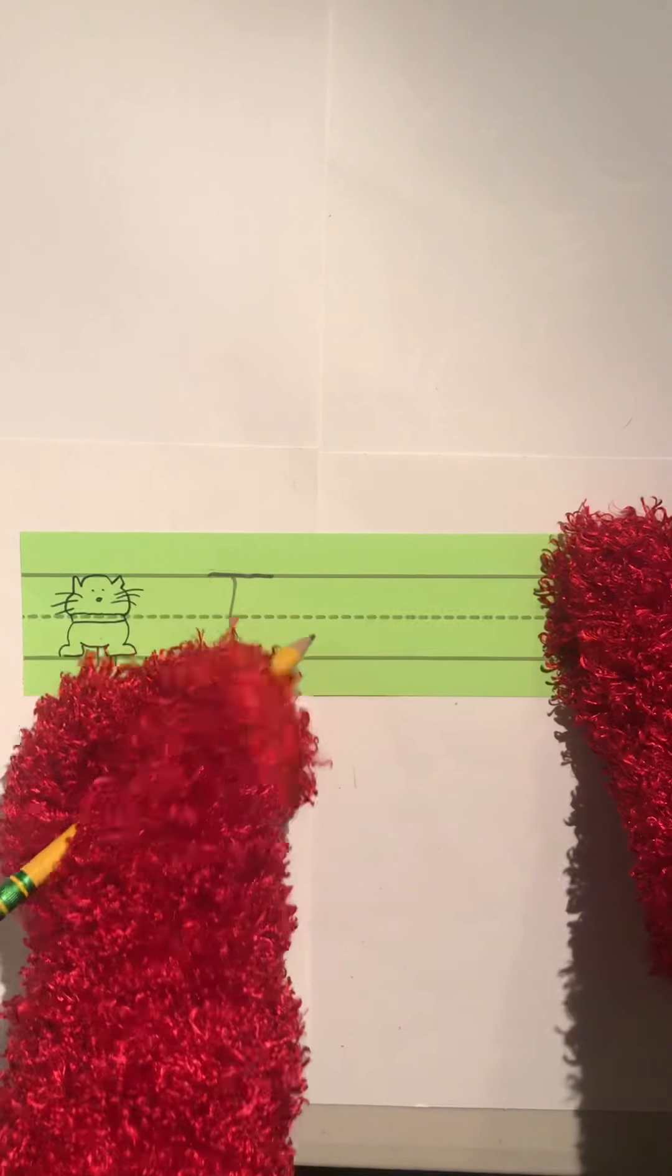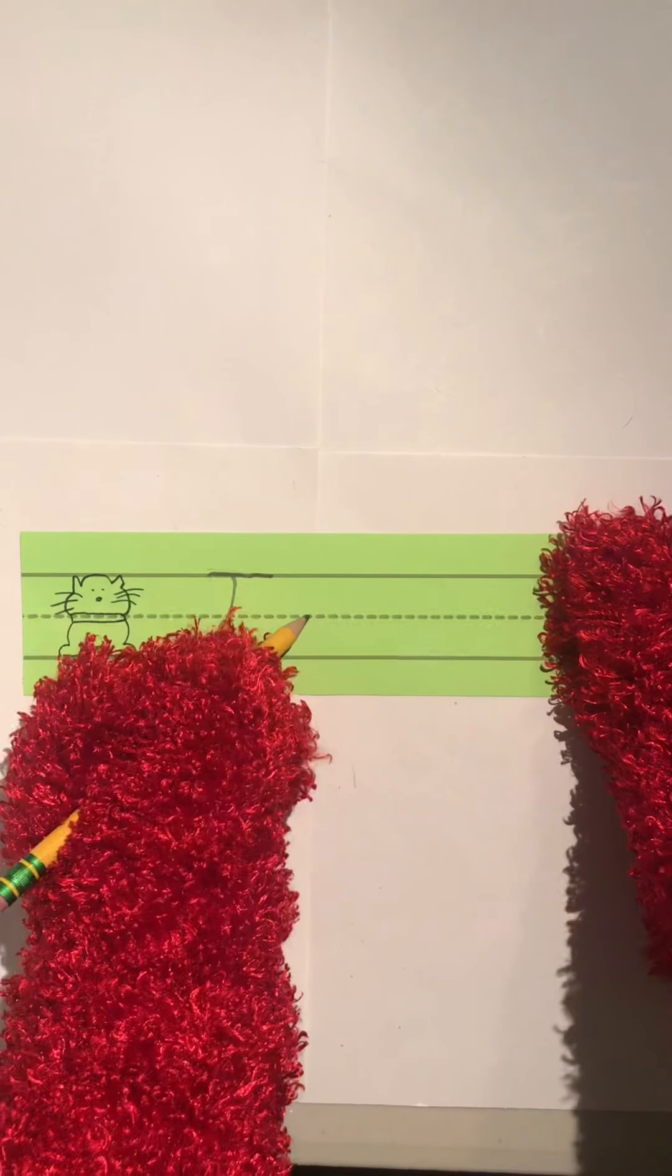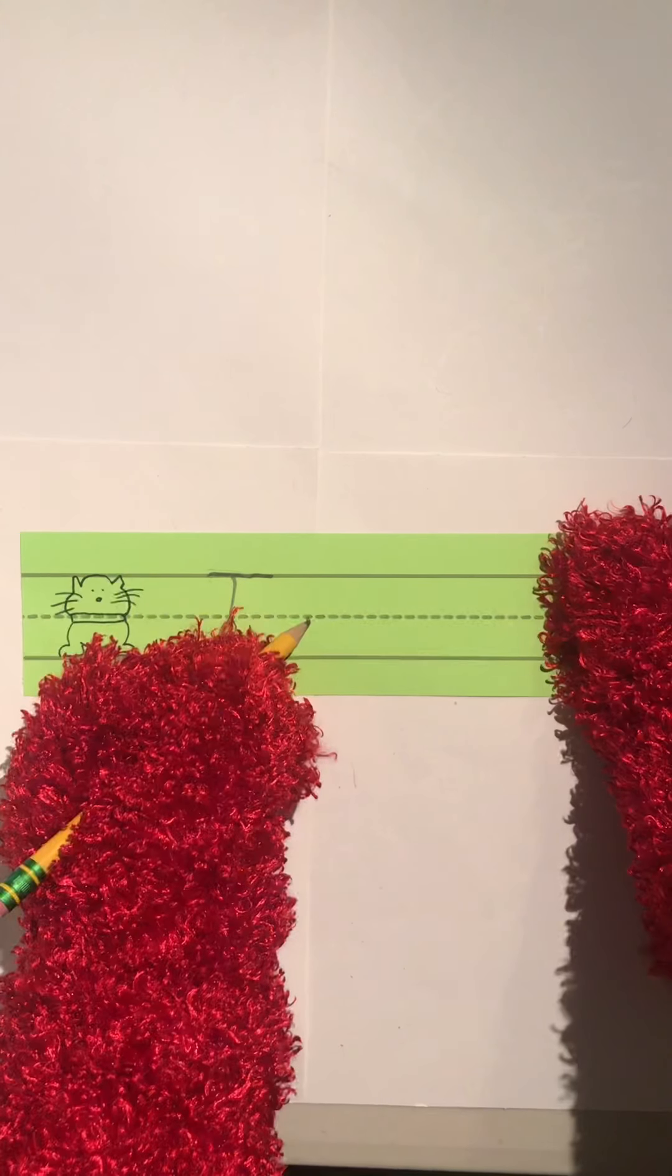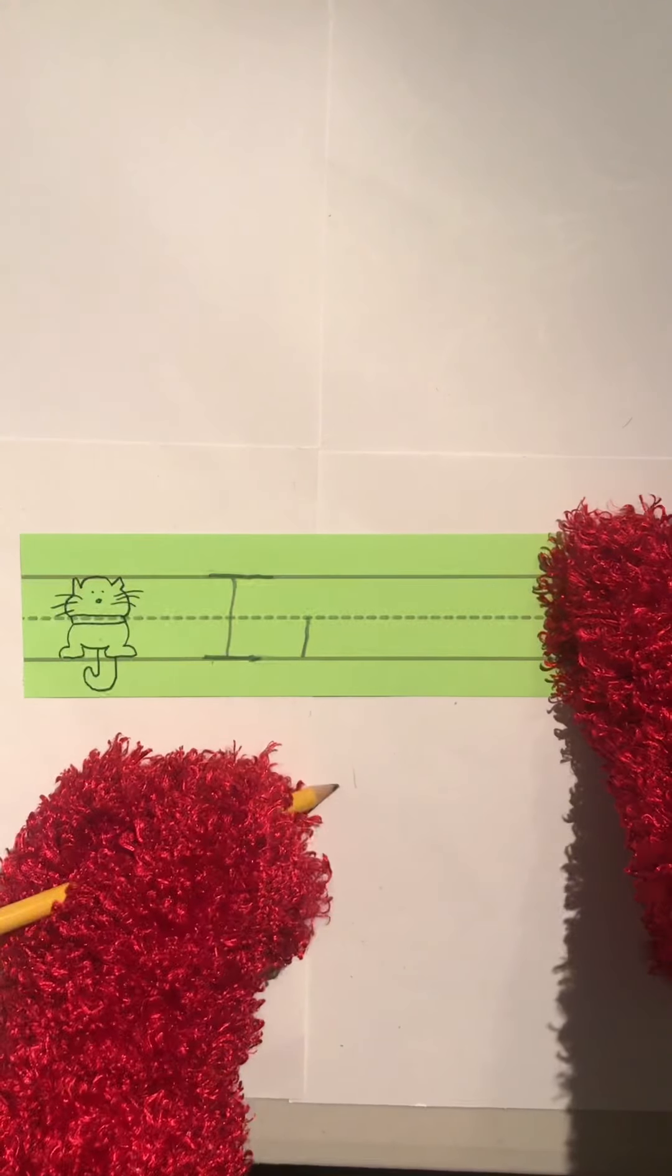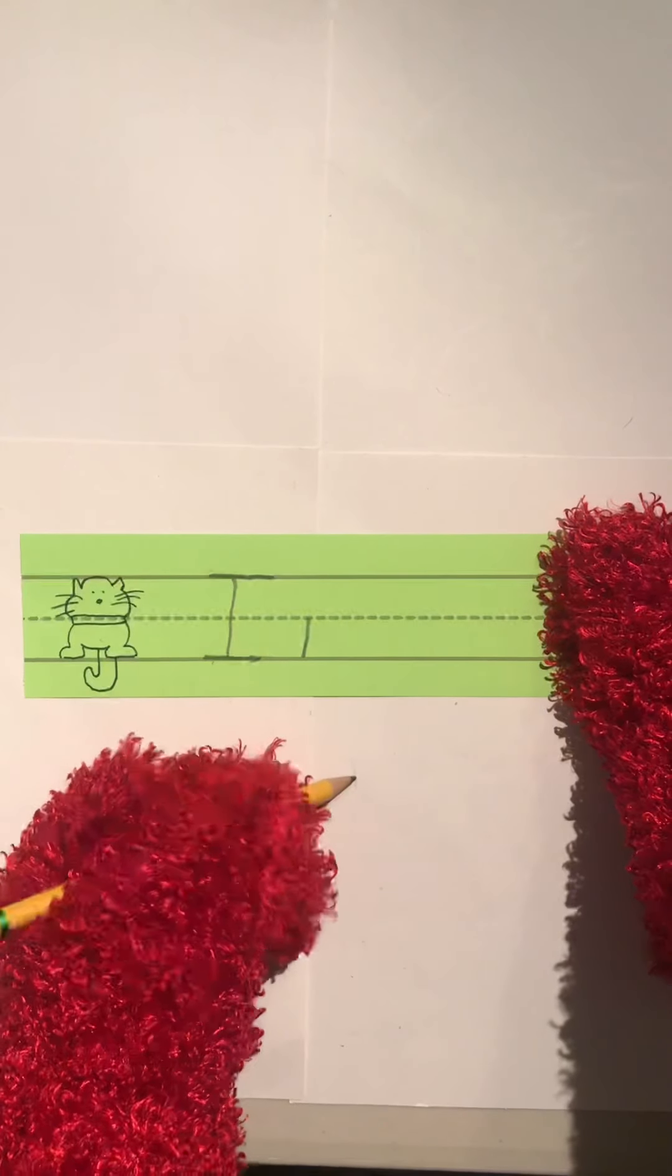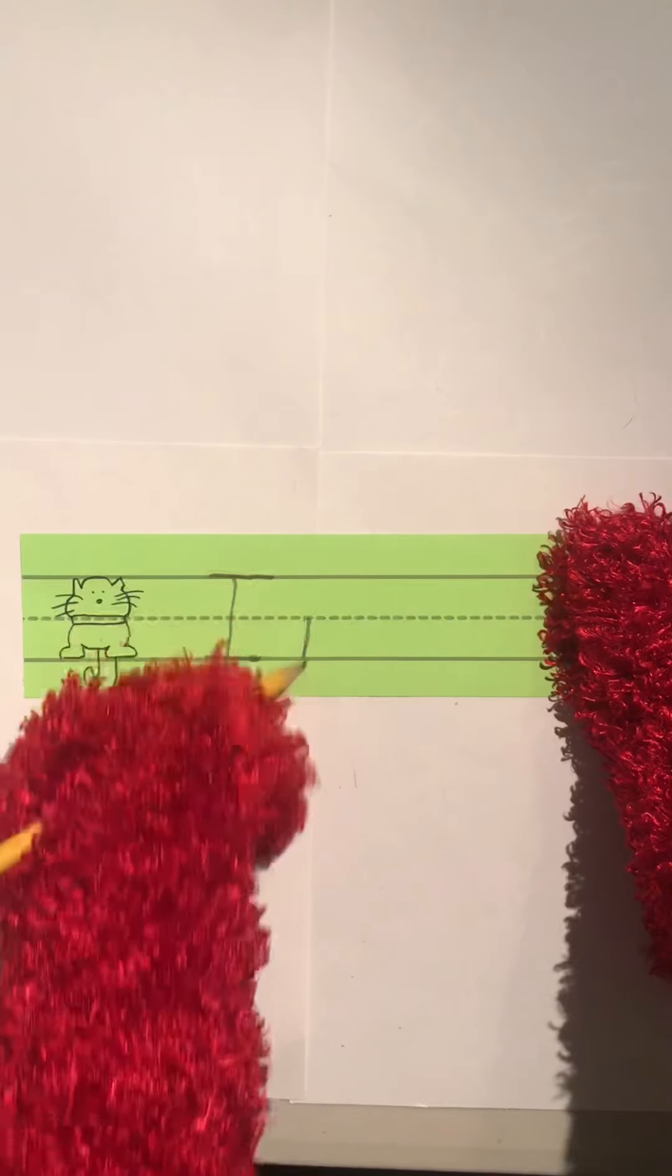Now, the lowercase I looks like this. It's going to start at the collar line, and I'm going to draw a straight line down. It's a short letter, but I'm not done yet. I have a line from the collar line to the foot line. Let's go straight down.